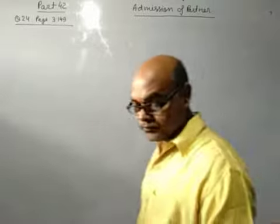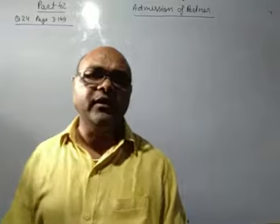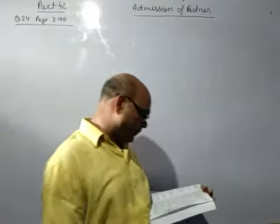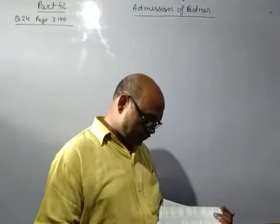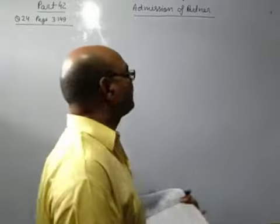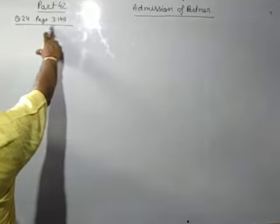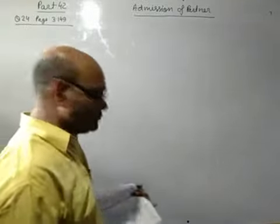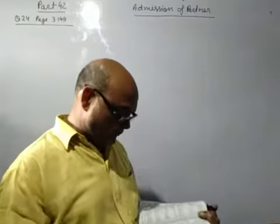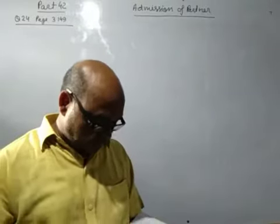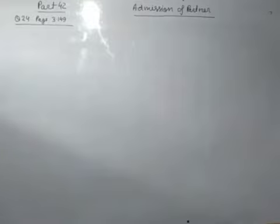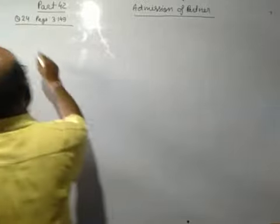Good morning students, again we will see some more examples of goodwill. See question number 24, page number 3.149. P and Q are partners sharing profit in the ratio of 7 is to 5, so old ratio between P to Q, this ratio is given 7 is to 5.